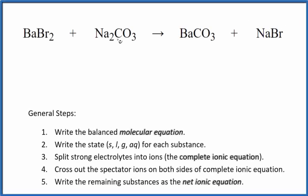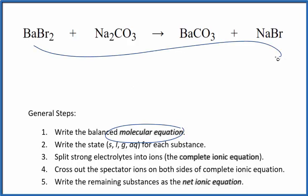Let's write the balanced net ionic equation for BaBr2 plus Na2CO3. We have barium bromide and sodium carbonate. So the first thing we do with net ionic equations, we need to balance the molecular equation. This is the molecular equation here.